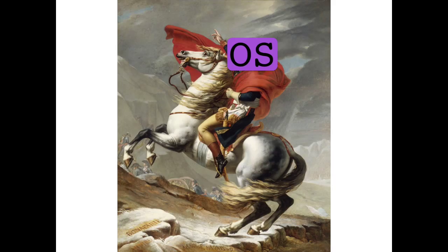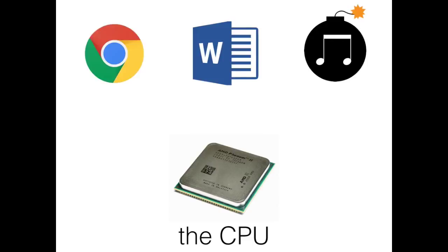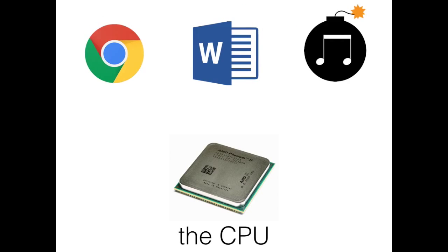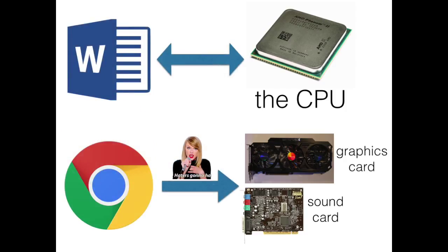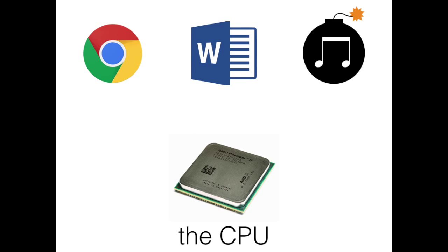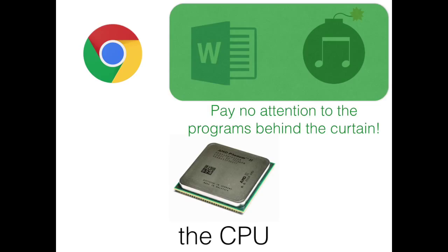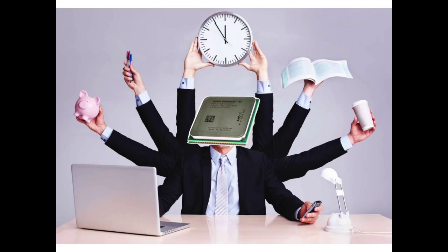The operating system can take care of both of these by doing something called scheduling — keeping a schedule for the CPU and deciding which program is using it and when. The operating system is likely to swap programs on and off the CPU very rapidly: tenths, hundredths, or even thousandths of a second. So while Chrome is busy outputting sound and graphics, the operating system can give Word a turn on the CPU. The programs themselves know nothing about this — the operating system provides them with the illusion that they are the only program using the CPU. Thanks to this scheduling, no program freezes and we get the most efficient use out of the CPU by keeping it always busy.